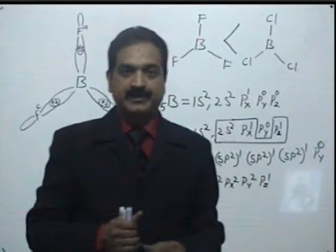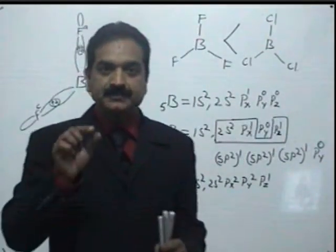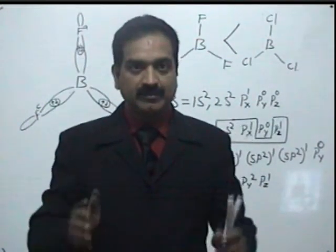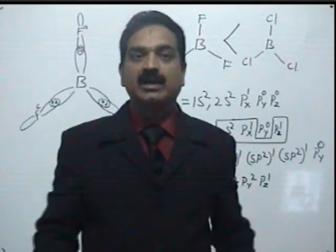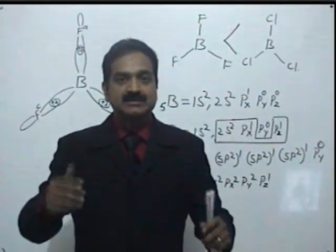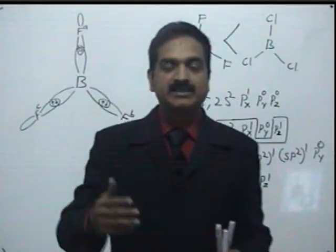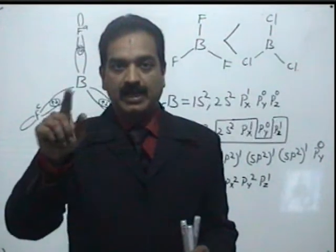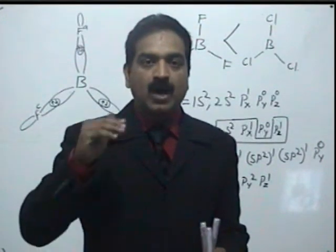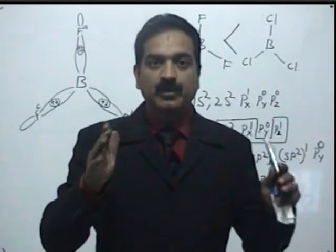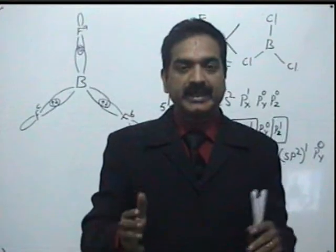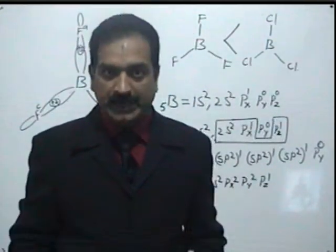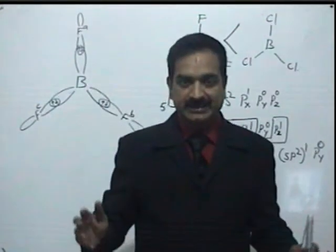Back bonding in BF3. BF3 as well as BCl3 both are Lewis acids. Lewis acids are species which can accept a lone pair of electrons. In BF3 as well as in BCl3, the outermost shell of boron is incomplete. In both cases, boron has only 6 electrons in the outermost shell, so both are Lewis acids.